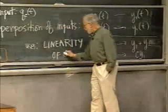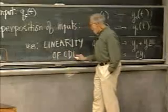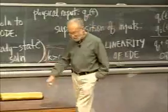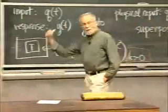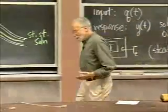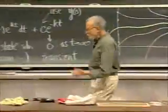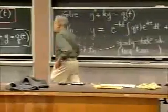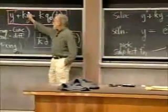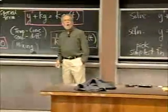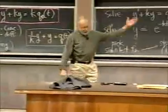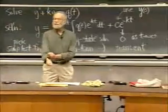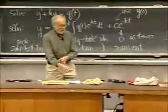We'll have a very efficient and elegant way of seeing this when we study higher order equations. For now, the little calculation done in the notes will suffice for first order equations. It essentially uses the fact that the equation is linear — the linearity of the ODE. Something like this would not in any sense be true if the equation had, for example, y squared instead of y.